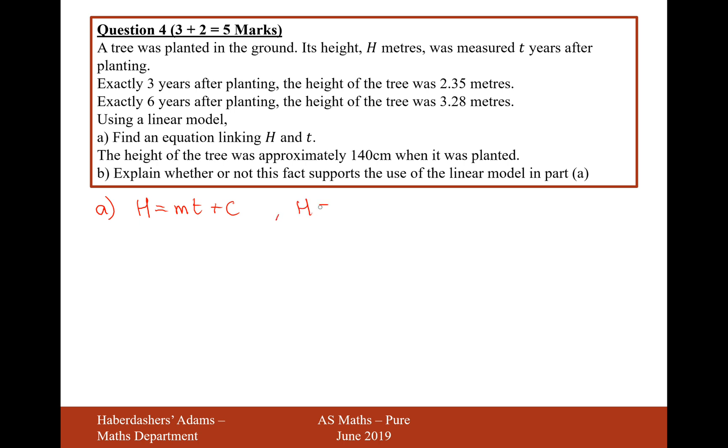And we'll do this twice because we've got two bits of information that need going into this equation. So with the first bit of information, t equals 3 and h equals 2.35. So 2.35 equals m times 3 plus c. Or in other words, we could write 3m plus c equals 2.35. And that would be the first of our two simultaneous equations.